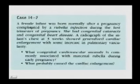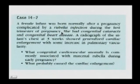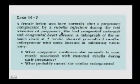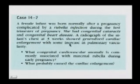Case 14-2: A female infant was born normally after a pregnancy complicated by a rubella infection during the first trimester — the window of greatest susceptibility to developmental abnormalities due to this viral infection. She had congenital cataracts and congenital heart disease. A radiograph of the infant's chest at three weeks showed generalized cardiac enlargement with some increase in pulmonary vascularity.